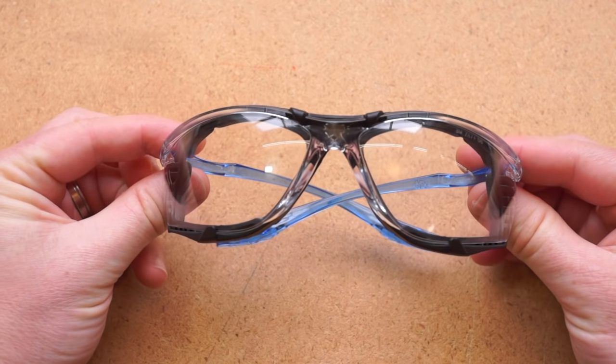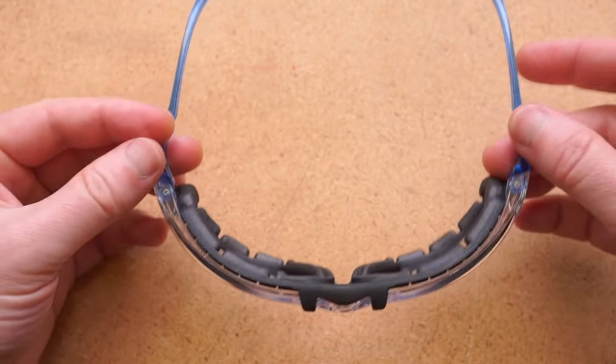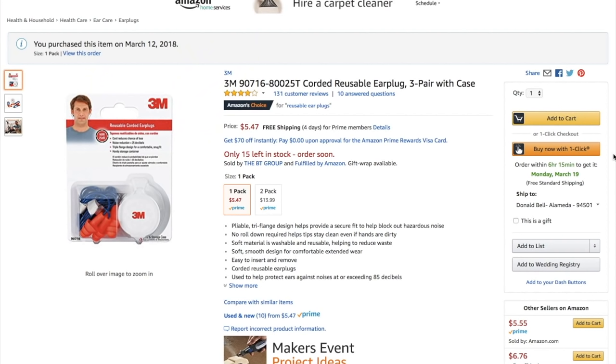Next up, the 3M Virtua CCS safety goggles and earplugs. It's $5 for the goggles and $5 for the box of earplugs. You put them together,